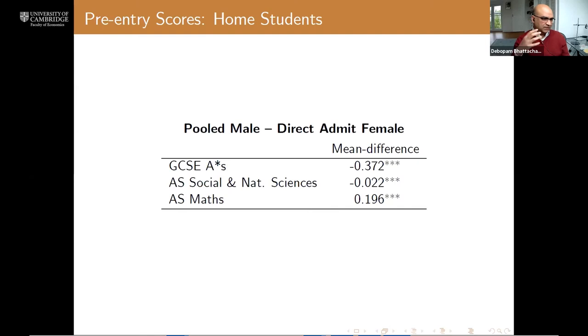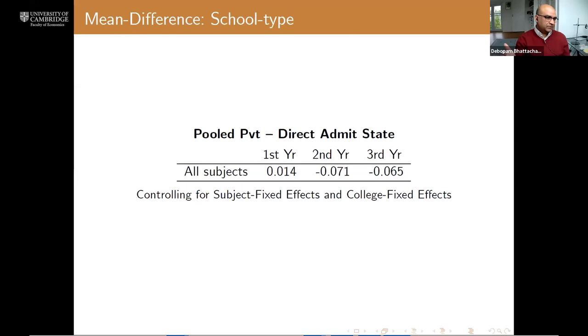So why has this happened? Why is it that these directly admitted women are doing so much worse? One of the things we did is we looked at how they did before they came into Cambridge. This is being done solely for home students who did their A levels. If you look at GCSE A stars, the directly admitted females are actually doing significantly better—this number is negative, which means the directly admitted females have much better GCSE A star records than the pooled males. If you look at AS level scores, it's not quite that high, but it's still negative and highly significant. The only thing in which these pooled males are doing better in terms of pre-Cambridge test scores is the AS math, in which they're quite a bit stronger.